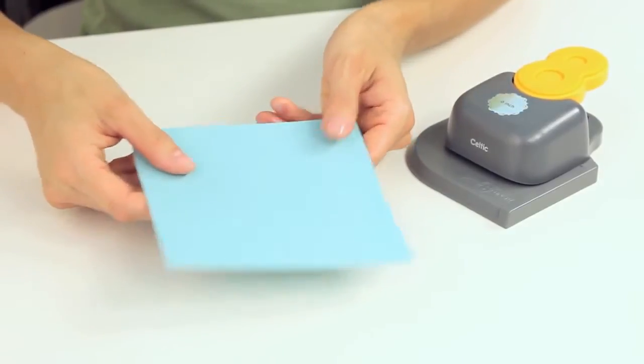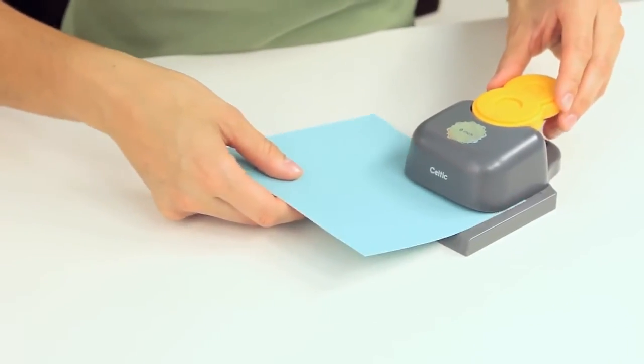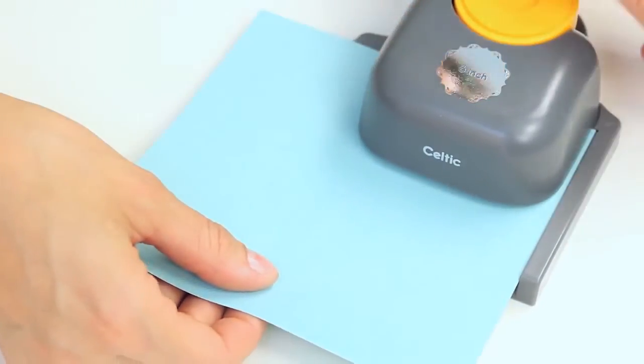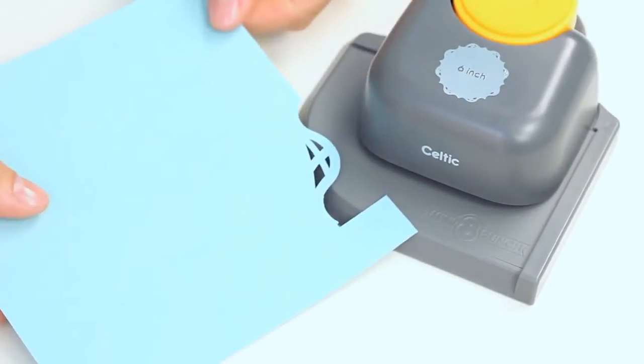Start by trimming your paper to a 6x6 inch square and feed the paper in the punch. Simply insert the paper in the corner of the punch and start punching.